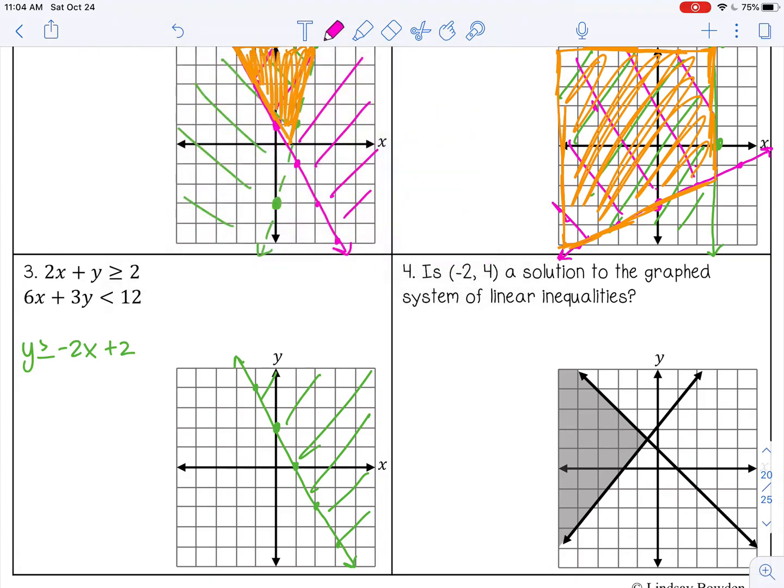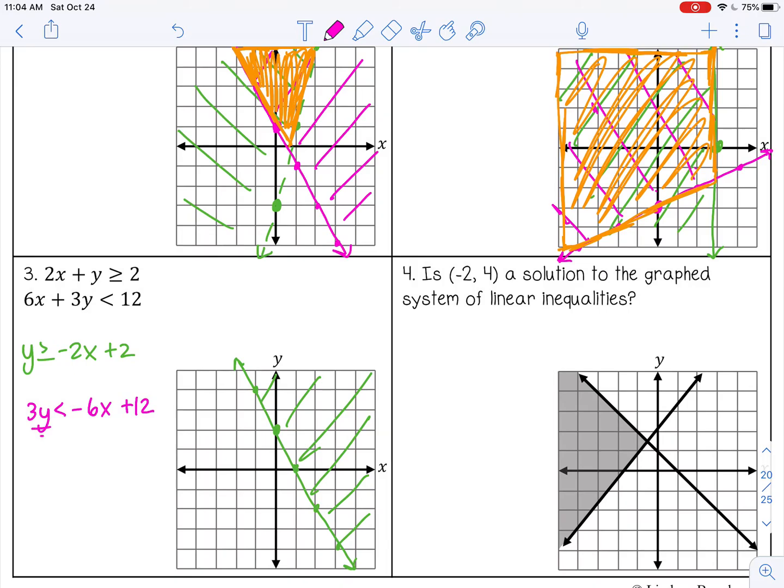Alright, and then number 2, let's see, 3y, I'm going to move that 6x to the other side, it becomes negative 6x, then divide by 3. I didn't divide by negative, so I don't have to flip the sign. See that's negative 2x plus 4.